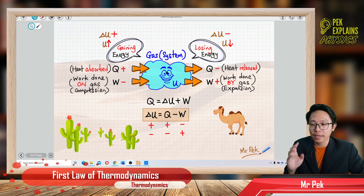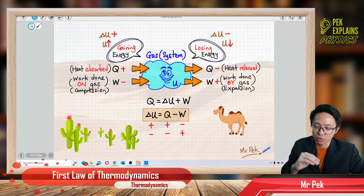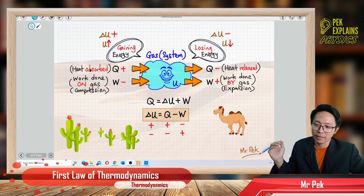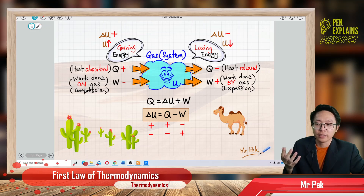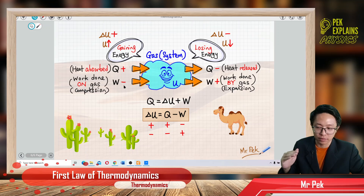Internal energy of the gas will increase when heat is absorbed into the gas. When heat is absorbed into the gas, Q is positive — heat transfers from the surrounding into the gas. Of course the internal energy increases, delta U is positive, and the gas gains internal energy. Another way of gaining energy is work done on the gas, or compression, where work done is negative.